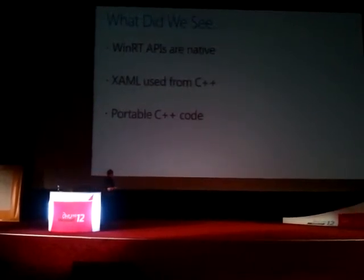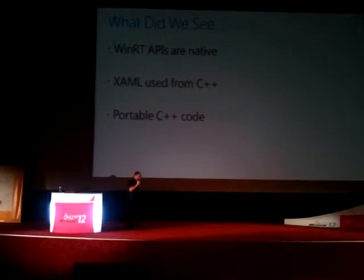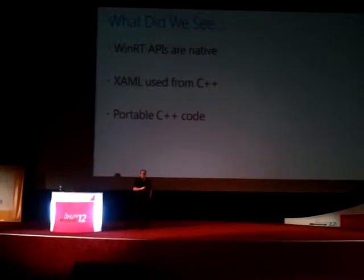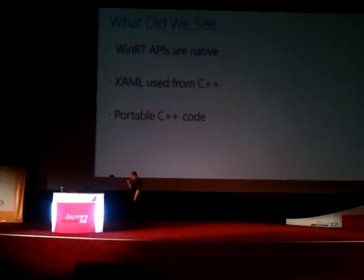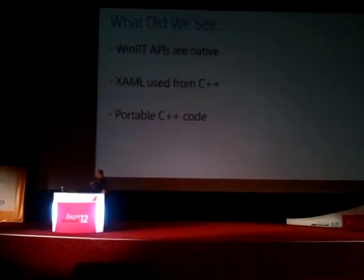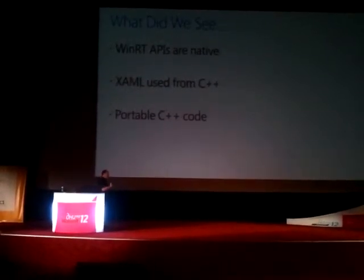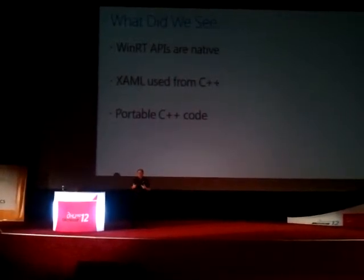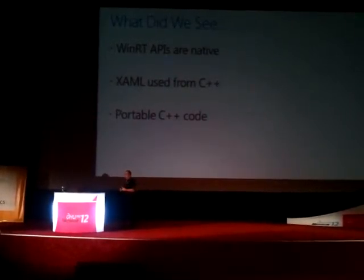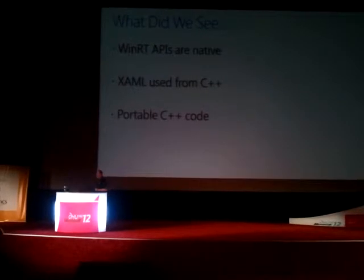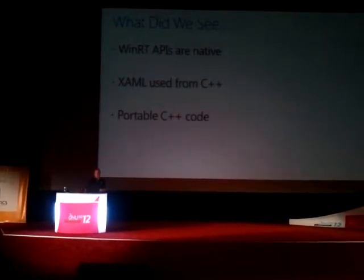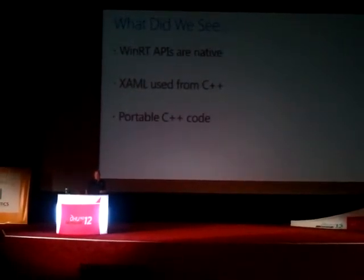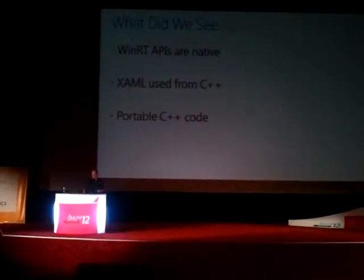The third thing I want you to take away is that these were native calls. That was C++ making a native call to WinRT — it wasn't going through anything else other than the standard API calls, which means the performance was very good. It didn't show it, of course, on a hello world application, but in general the performance is very, very good when you start doing that sort of thing.